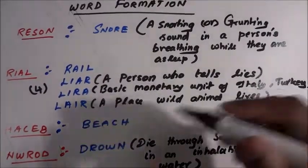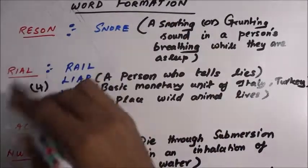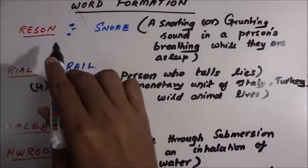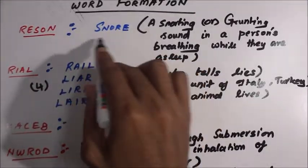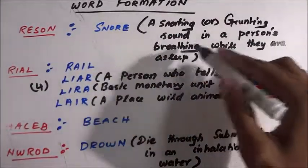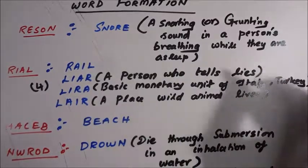Hi, now we can see five word formation examples. The first is the jumbled letters R-E-S-O-N, which can be rearranged to form SNORE - a meaningful word meaning a snorting or grunting sound in a person's breathing while they are asleep.